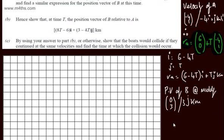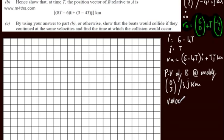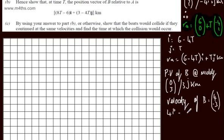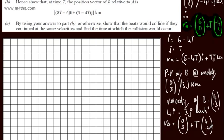The velocity of B can be given in column form as (4, −3), or in i and j notation 4i minus 3j km/h. Putting this together, rB equals (0, 3) plus t times (4, −3), in kilometres.